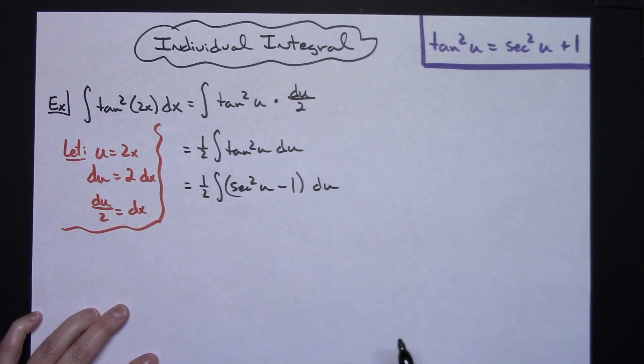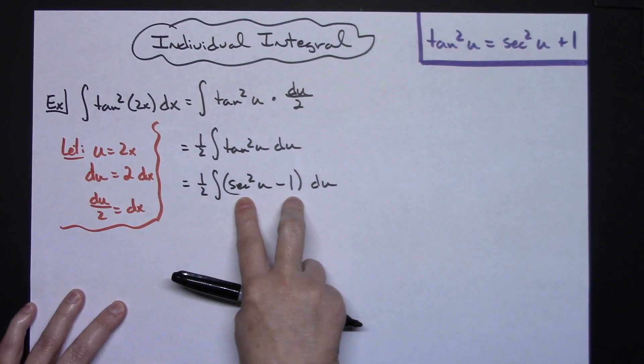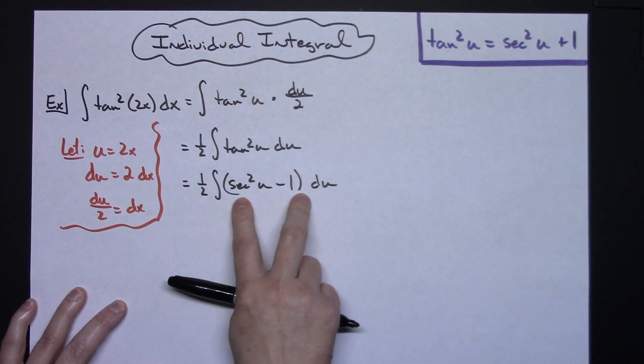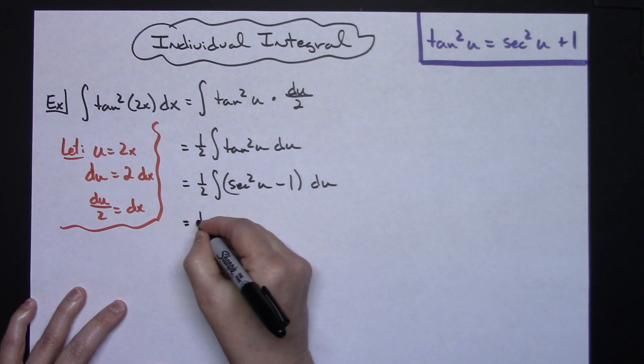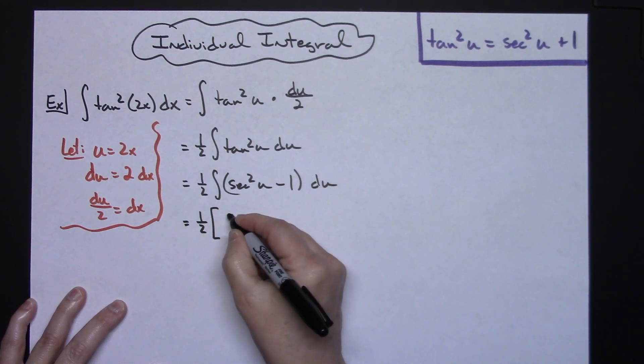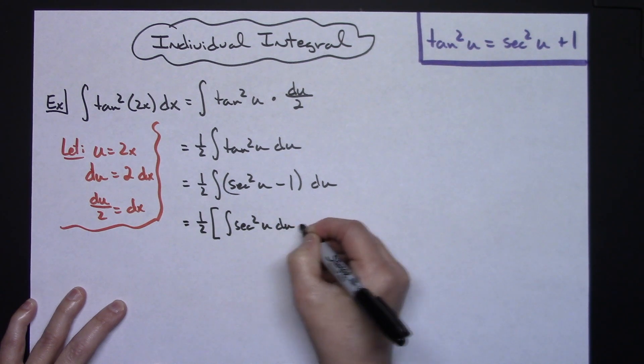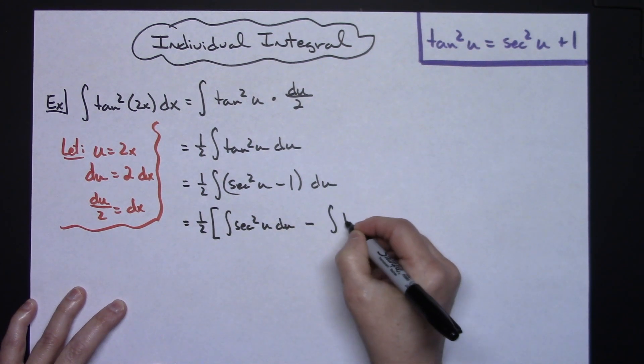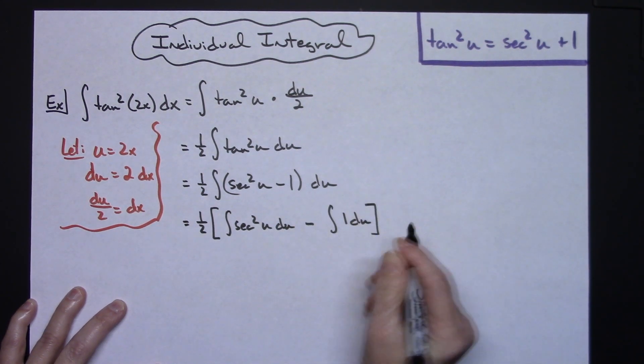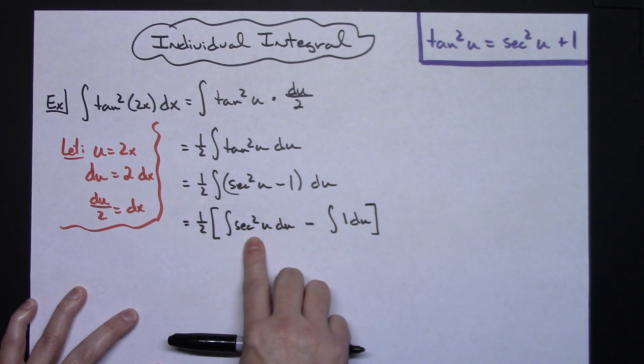At this point, the easiest way to do this is to show that you're breaking this up into two individual integrals. I'm going to leave that one-half out in front. I'll have the integral of secant squared u du, and then minus the integral of 1 du.